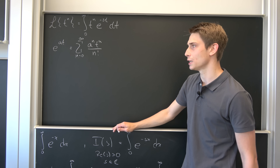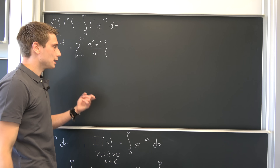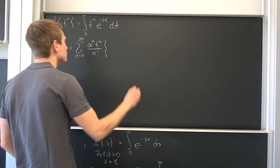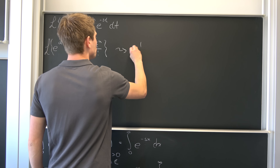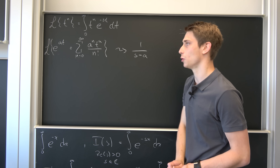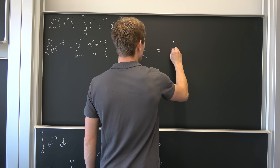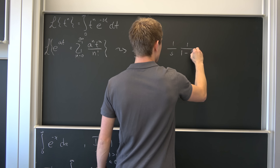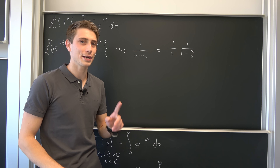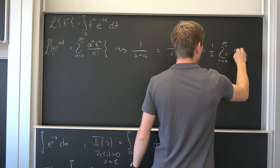So why am I taking a look at that? Well, if you take the Laplace transform of both sides, the left-hand side — the Laplace transform of e to the a times t — is 1 over s minus a (linked in the description). We can factor out an s to get 1 over s times 1 over 1 minus a over s. This looks a lot like the geometric series, so this is nothing but 1 over s times the sum from n equals 0 to infinity of a over s to the nth power.